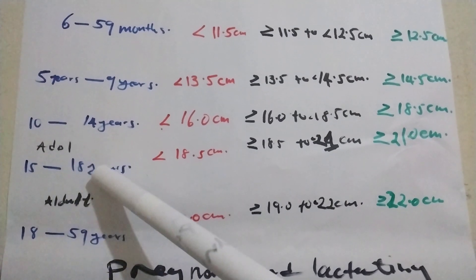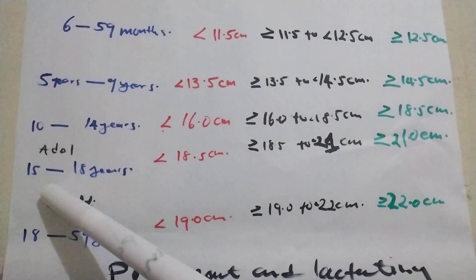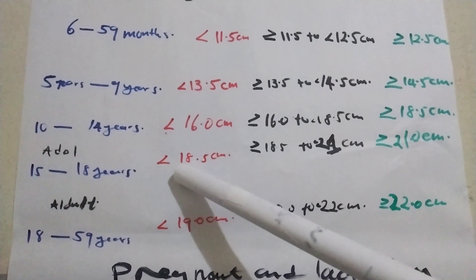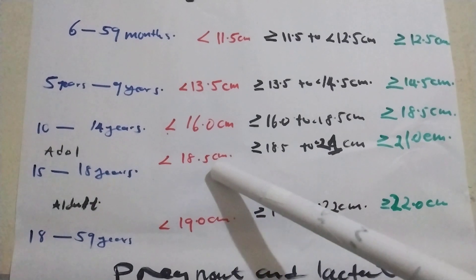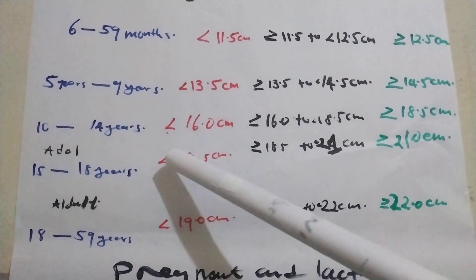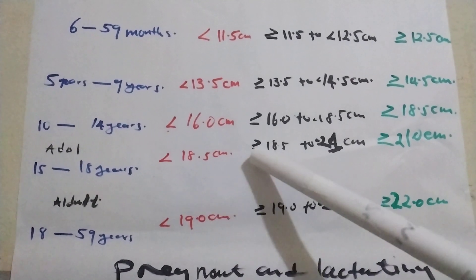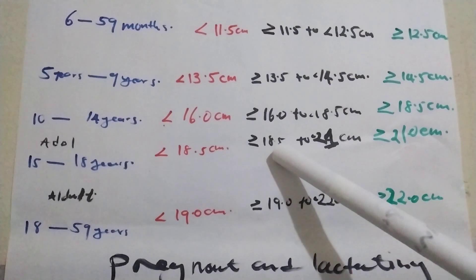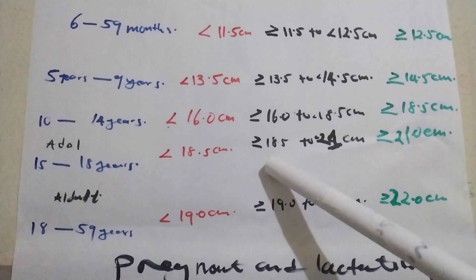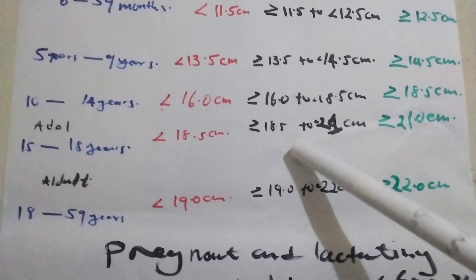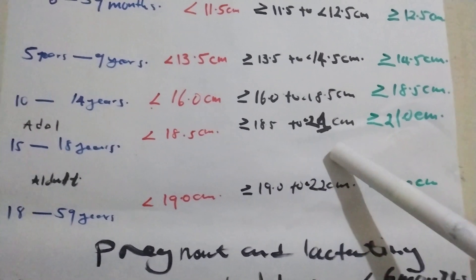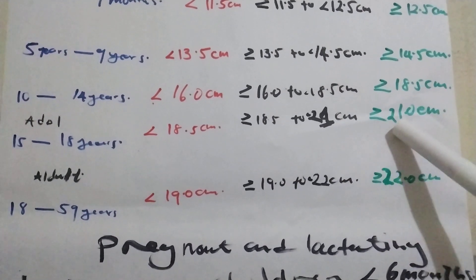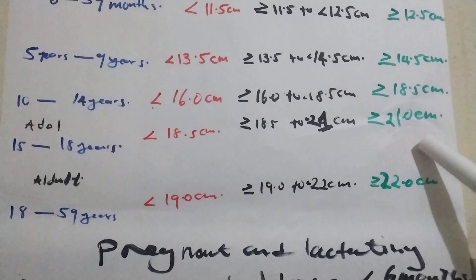For adolescents: severe acute malnutrition is less than 18.5 centimeters. Moderate acute malnutrition for this age category is 18.5 centimeters to 21 centimeters. Normal is 21.0 centimeters and above.